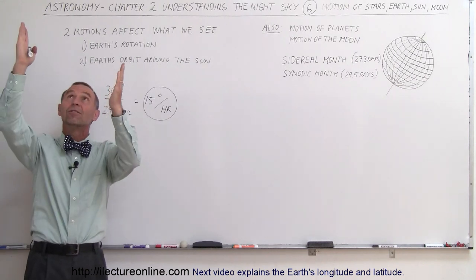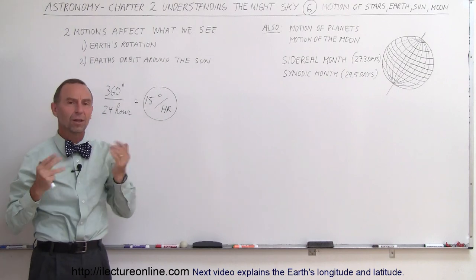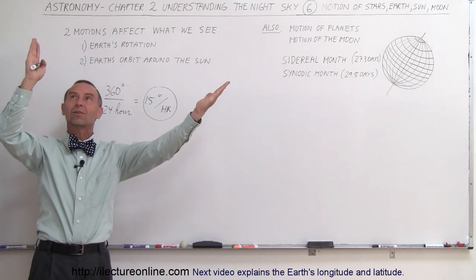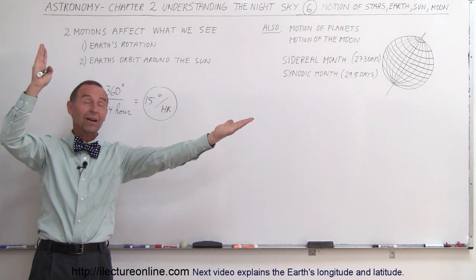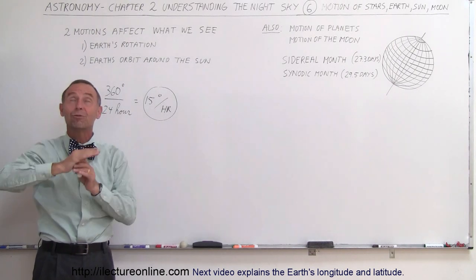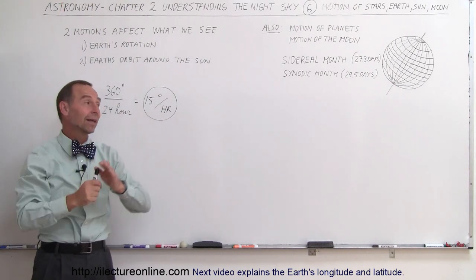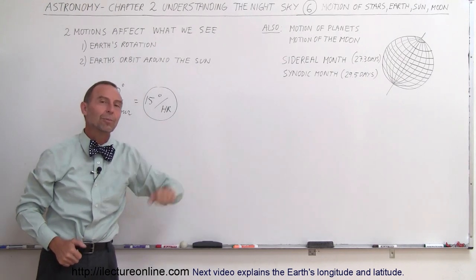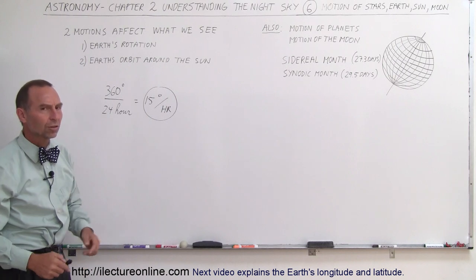Two hours later, Vega will now be 30 degrees away from the Zenith. Three hours later, 45 degrees. Four hours later, it will be 60 degrees. Five hours later, it will be 75 degrees. And six hours later, if it was directly above us at midnight, at six in the morning, Vega would be right at the horizon, ready to dip over the horizon. You can no longer see it at that point.